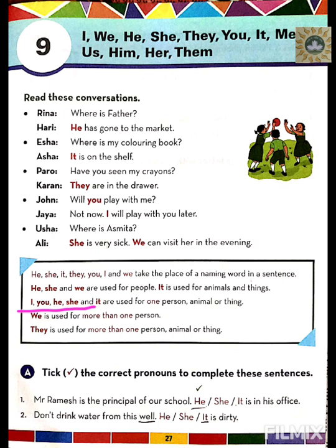I, you, he, she — these are used when the noun is in singular form, that is, when there is just one. They are used with singular number nouns.